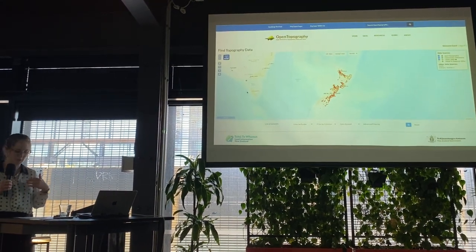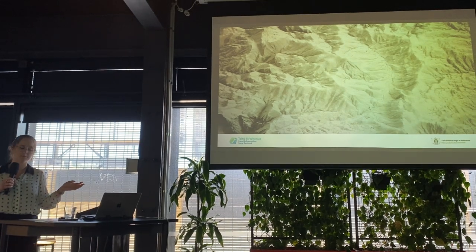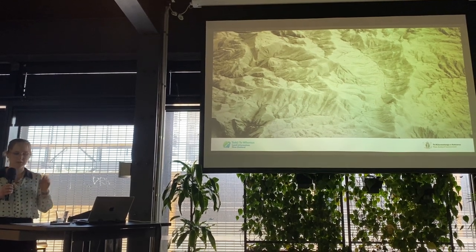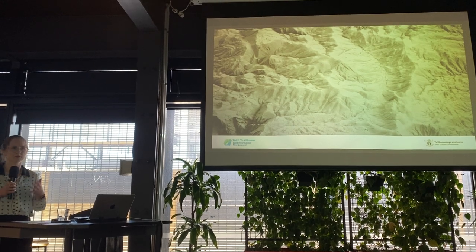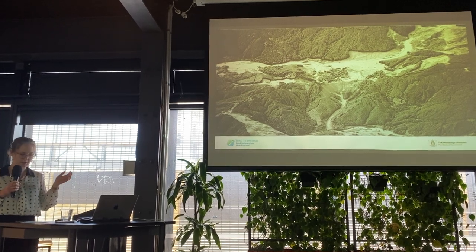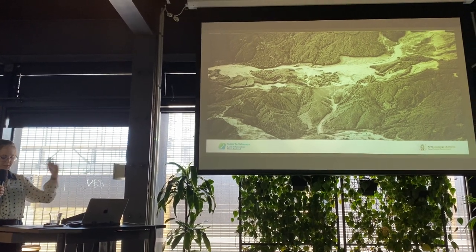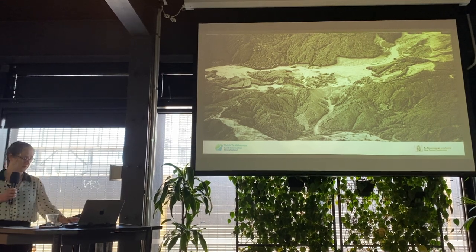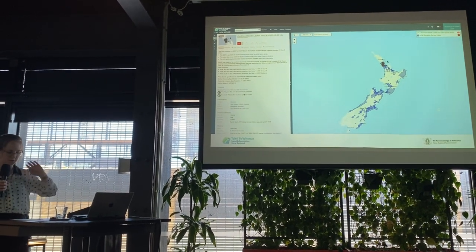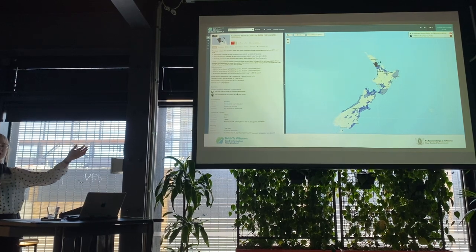The point clouds in the National Elevation Programme are distributed to the public through OpenTopography. There are two raster products derived from the point cloud data. The first is a digital elevation model, created from the ground points only — it's a bare earth model. The second is a digital surface model, created using all points except noise, so it includes features above the ground such as vegetation and buildings. Both raster products are available on the LDS.